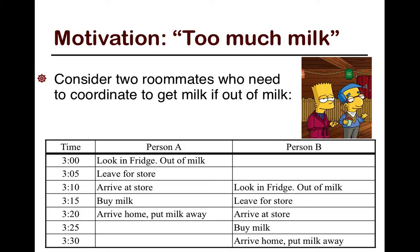The goal of the too much milk problem is to ensure that there's at least one carton of milk in the refrigerator, but not two. So there's exactly one. We assume only two roommates — n roommates is just an extension — but essentially we'll assume two people coordinating to ensure there's at least one carton of milk in the refrigerator.